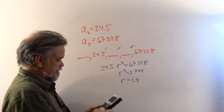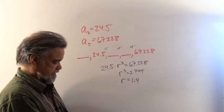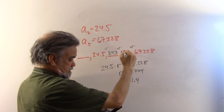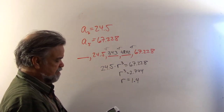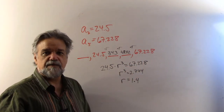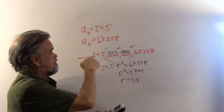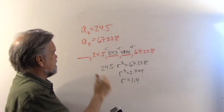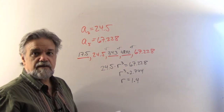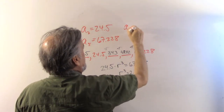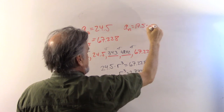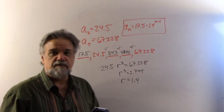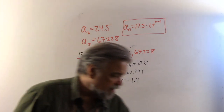With r equals 1.4: starting from 24.5, multiplying by 1.4 gives 34.3, then 48.02, then 67.228 — that checks out. To find a sub 1, divide 24.5 by 1.4 to get 17.5. So the explicit formula for this sequence is a sub n equals 17.5 times 1.4 to the n minus 1.